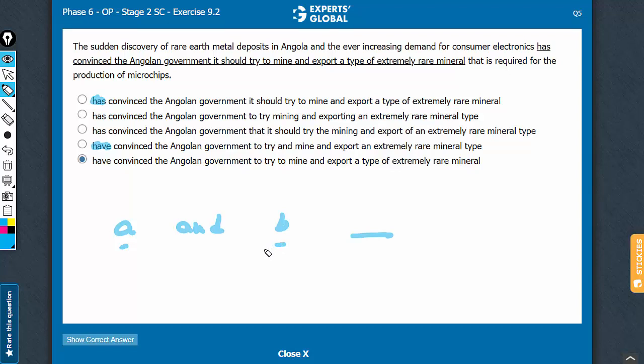Remember, A and B, where A and B are singular, when joined by an AND, lead to a compound subject, a plural subject.